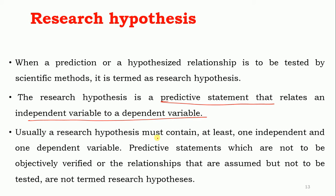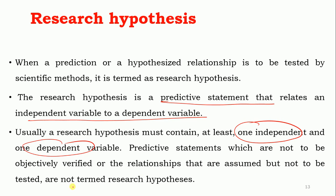Usually a research hypothesis must contain at least one independent and one dependent variable — that is the condition. Predictive statements that are not to be objectively verified, or relationships that are assumed but not to be tested, are not termed as research hypotheses.